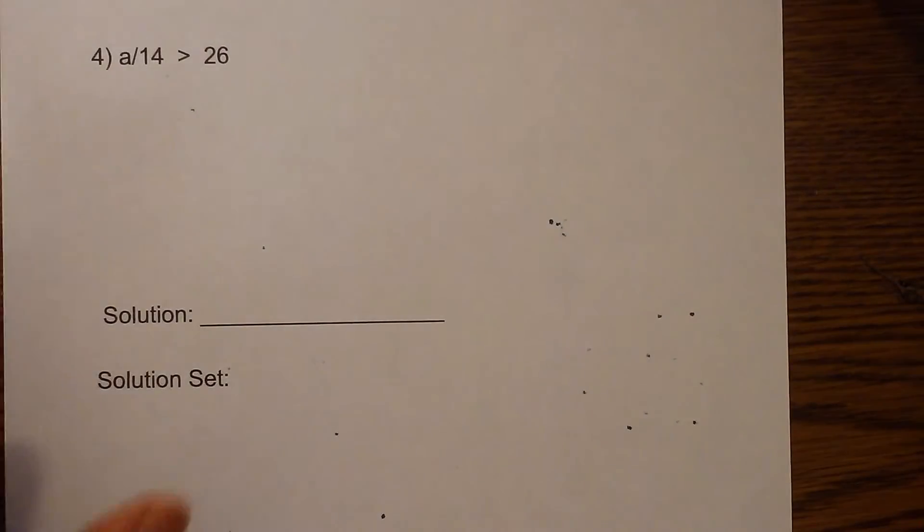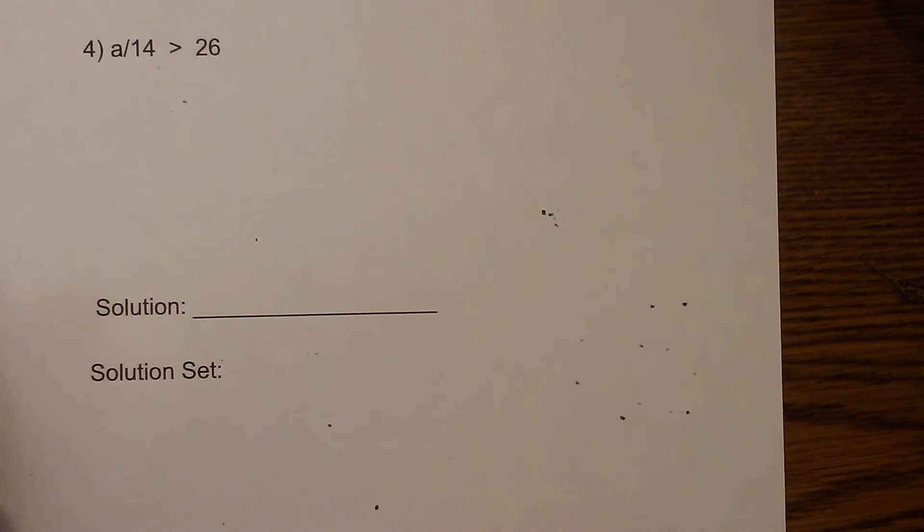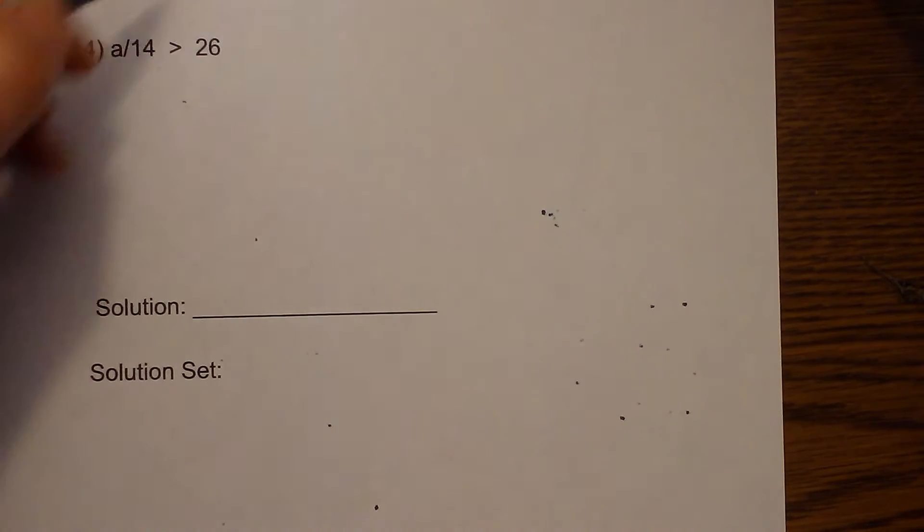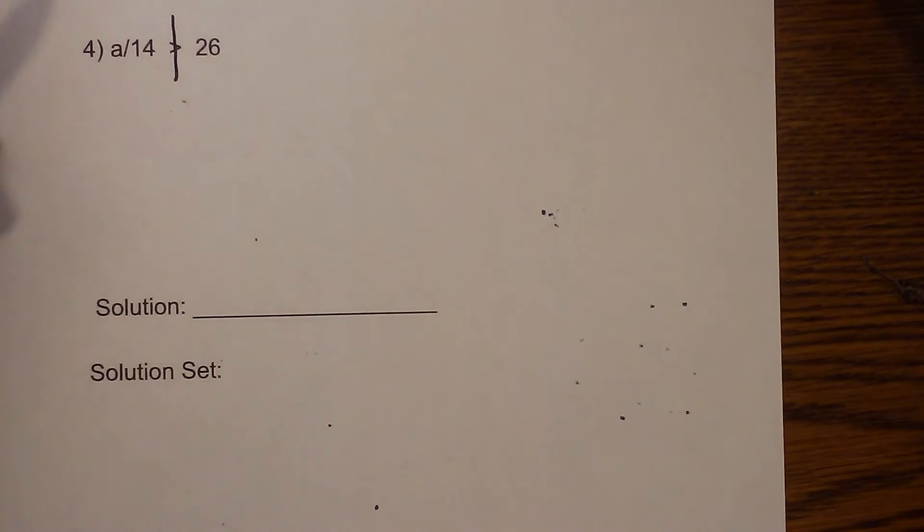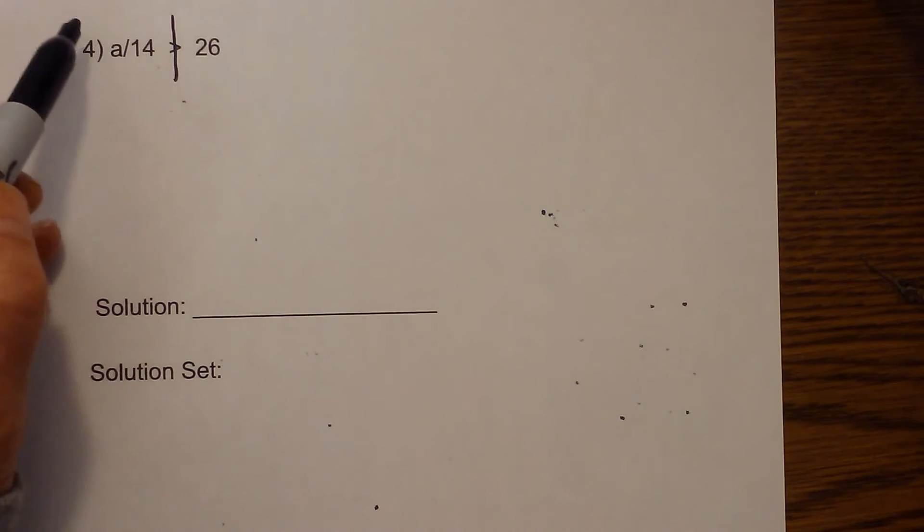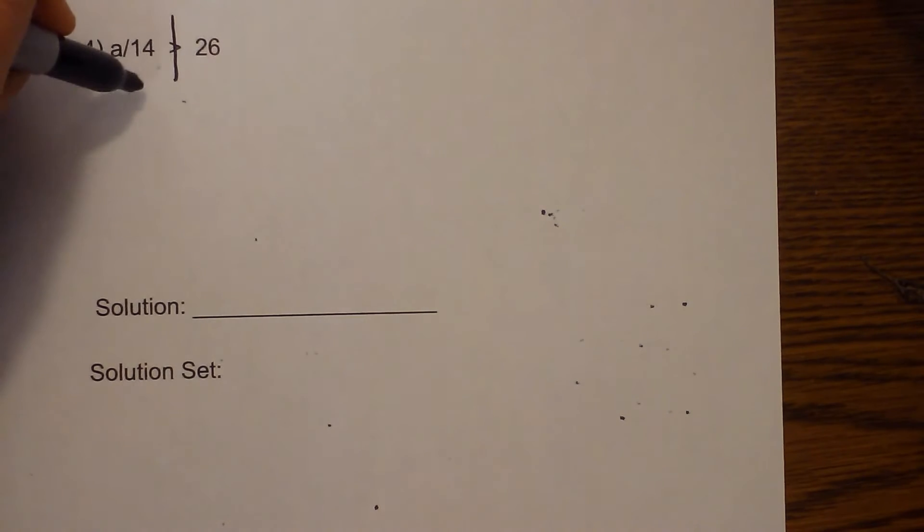Let's go ahead. I went ahead and skipped to number 4. So let's work number 4 because it has a division. Let's draw a line down the middle. And the operation is division.